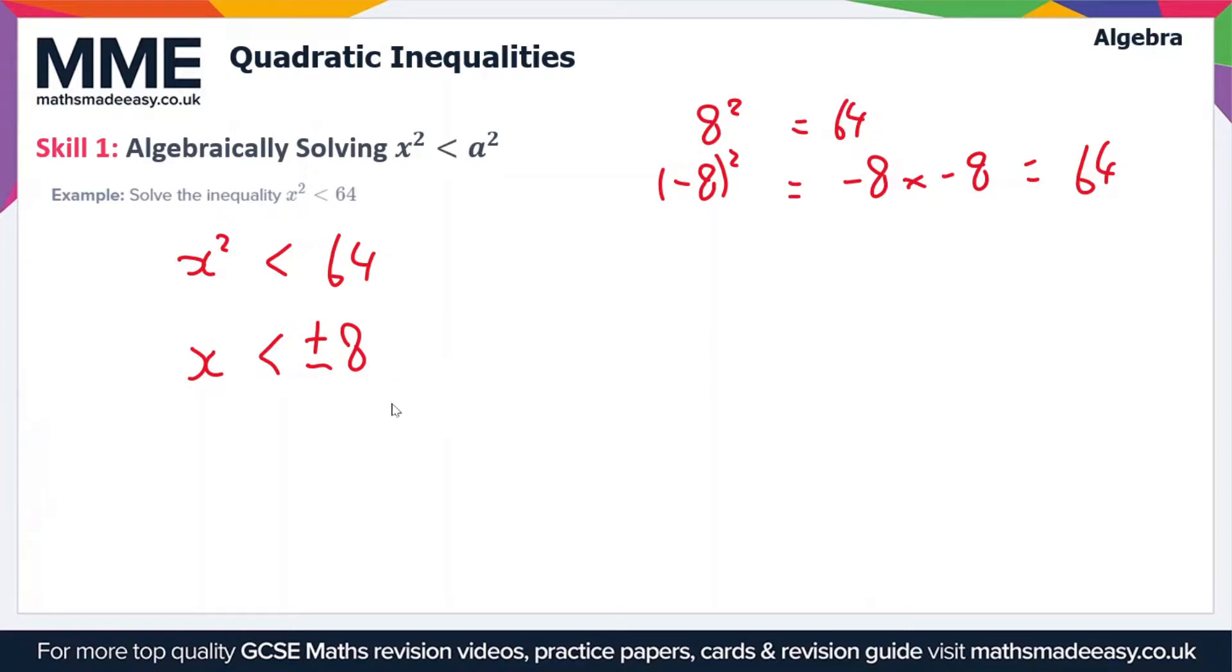So we end up with two solutions to our inequality here, x is less than plus or minus 8. So we can represent this as a range of values so that's going to be x is between minus 8 and plus 8. So essentially this is a range of values that when squared give a value less than 64.